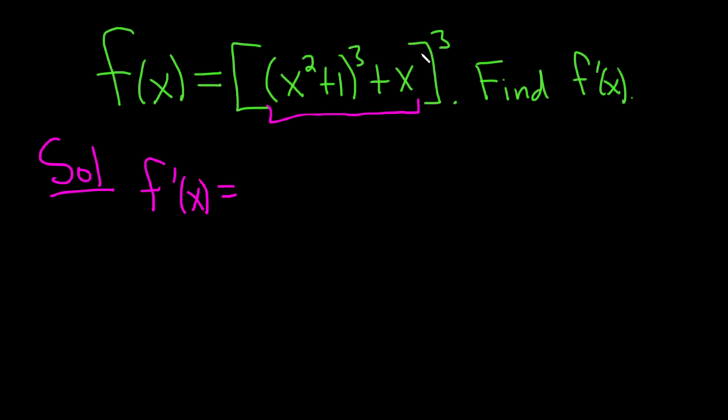So let's just do it one step at a time. Taking the derivative of the outside, we're going to bring down that 3. So we have 3, bracket, leave the inside untouched, x squared plus 1 cubed plus x, bracket, and then you subtract 1 from the exponent, so you get 2.